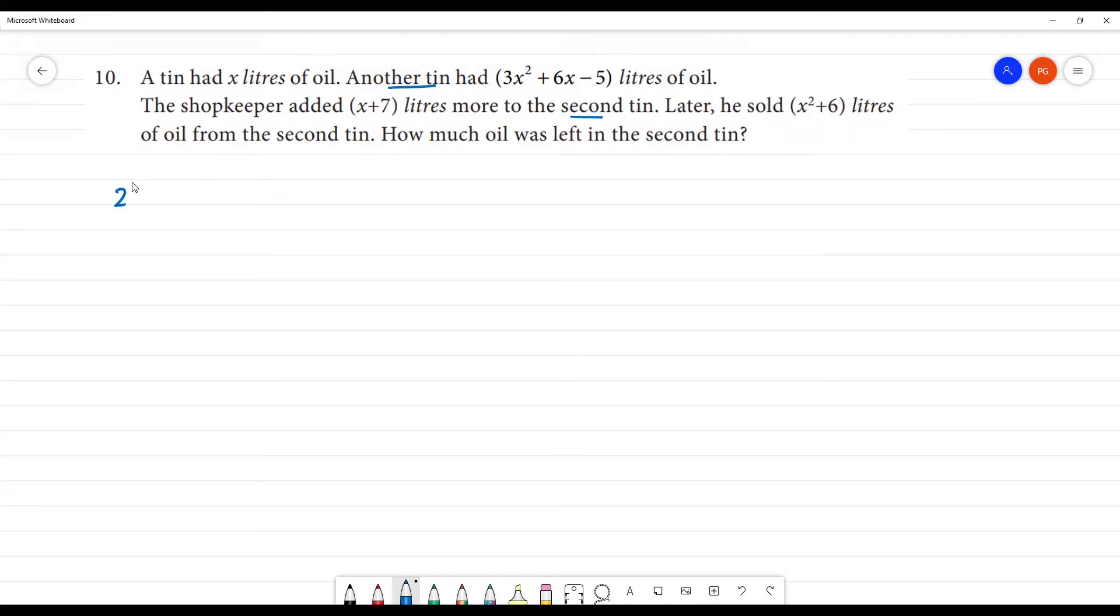In the second tin, it is 3x² + 6x - 5. The shopkeeper added x + 7 liters. So, how much is he adding? Adding x + 7.